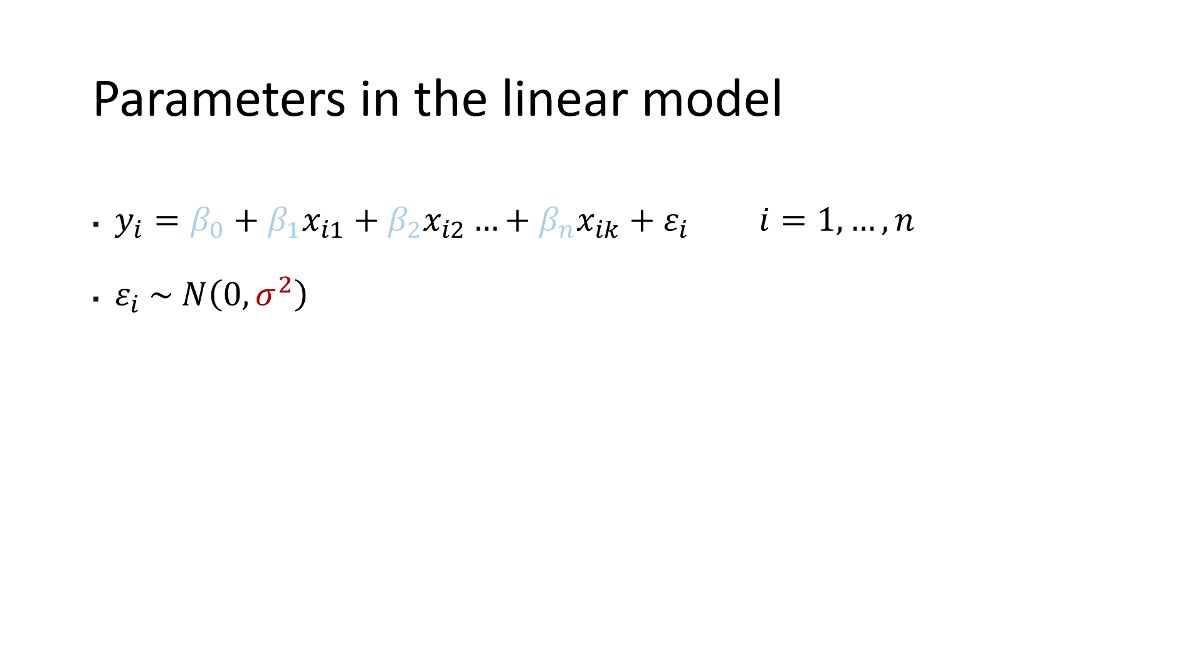Arguably we are usually more interested in the estimates for the intercept and the weights because we want to know how the explanatory variables relate to the outcome variable, but as I mentioned in the last video we have to take into account the uncertainty of these estimates. For this we will also need an estimate of the error variance.